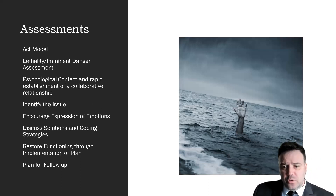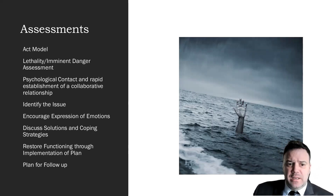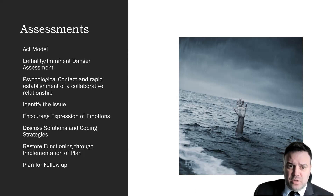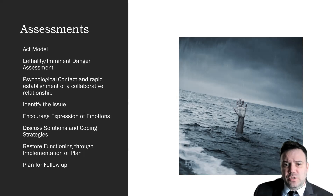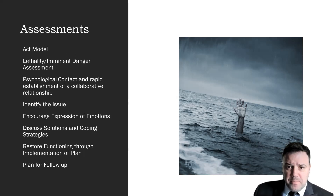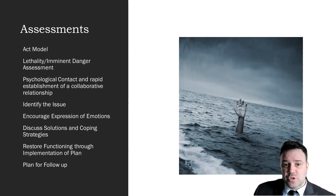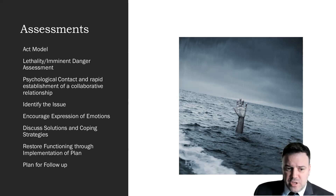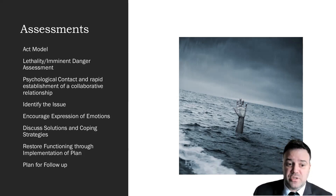I want to look at two types of models that crisis interventionists use. The first one is the ACT model. The ACT model first looks at analyzing the lethality and imminent danger that the person might be in or the state of mind they might be in — usually covered through a suicide assessment. Then the second part is to form some type of relationship with the individual, identifying the issues, encouraging expression of emotions, and then discussing solutions and healthy coping strategies. All of this eventually leads to a restoration of functioning through implementation of a plan to address the crisis.